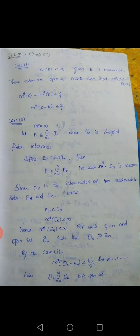Case 1: M of E less than infinity. Given E is measurable, there exists an open set O containing E such that M-star of O is less than or equal to M-star of E plus epsilon. Therefore M-star of O minus M-star of E is less than or equal to epsilon, and hence M-star of O minus E is less than or equal to epsilon.